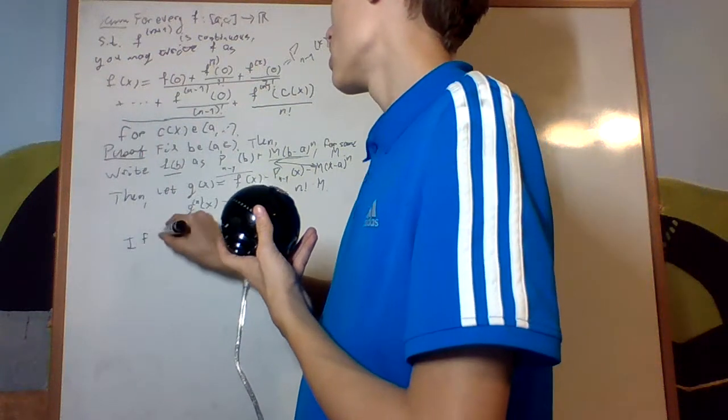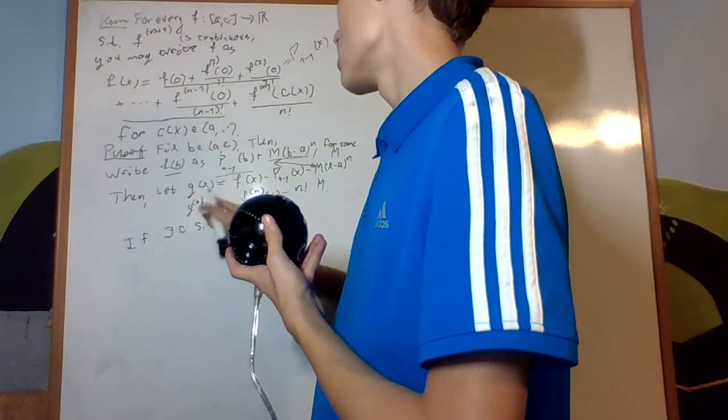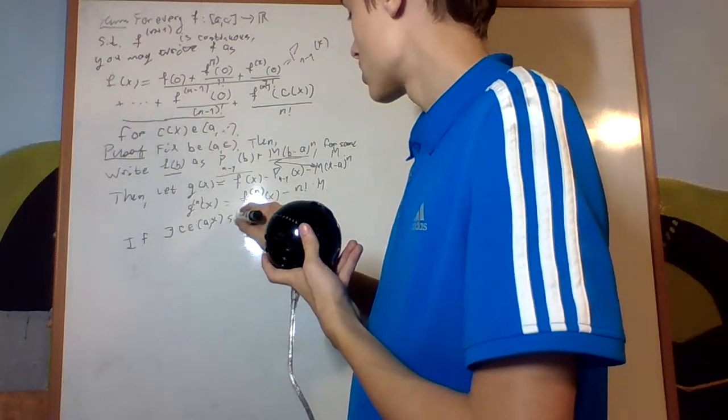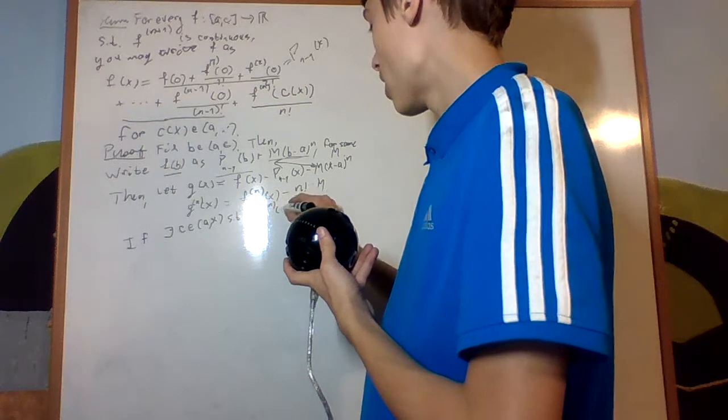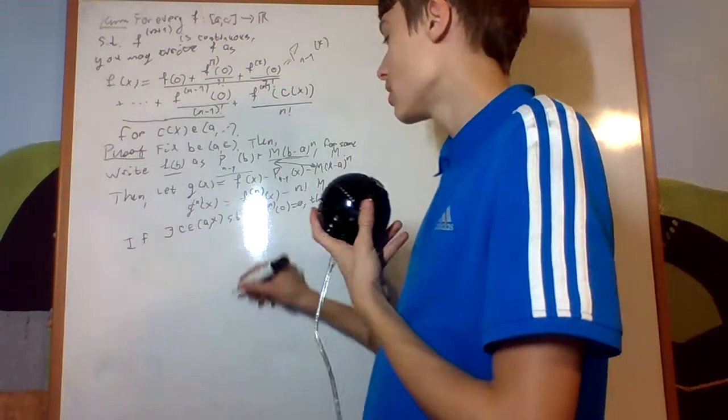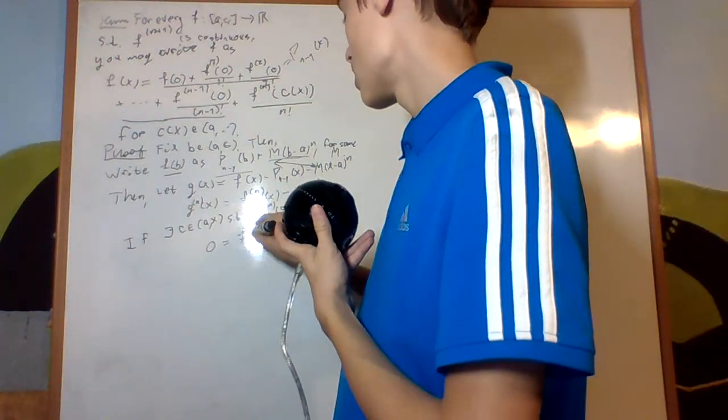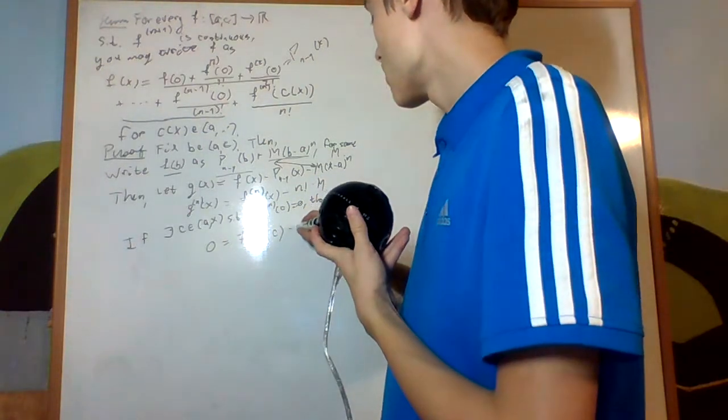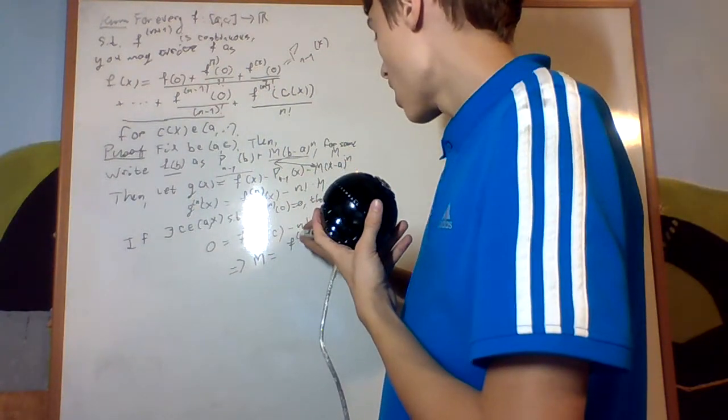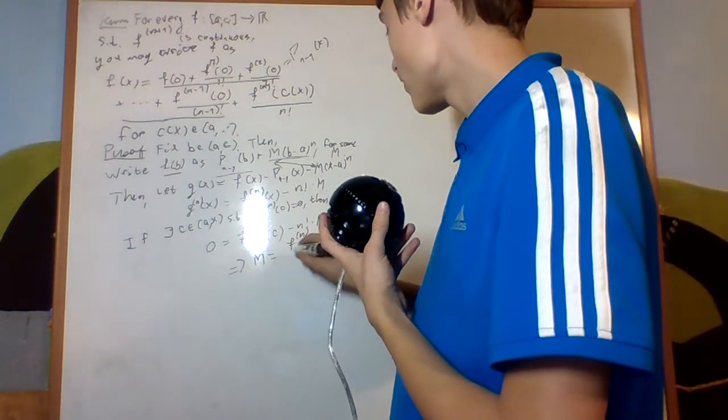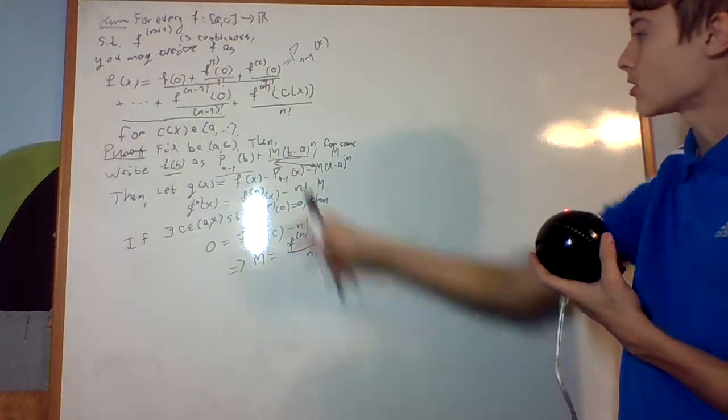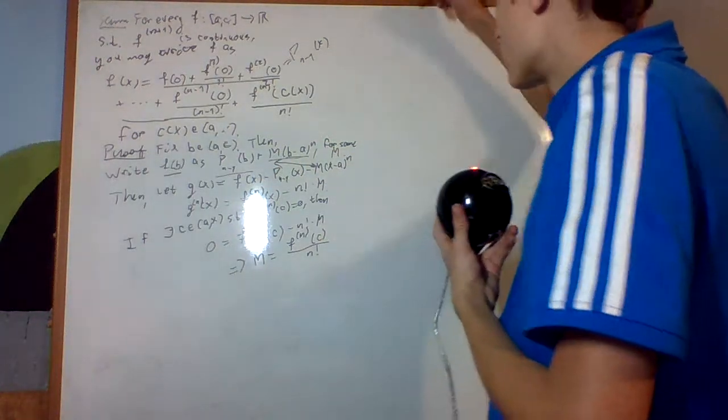And this singles out m and f to the f n factorial. So, if I can prove, if there exists c, an element ax, such that g nth derivative of c equals 0, then it's almost immediately proven, because then I'm going to have 0 equals nth derivative at c minus n factorial times m, and then I get m equals n factorial of f at c over n factorial, which is exactly what we want from that formula right there. So, now, let's prove that.